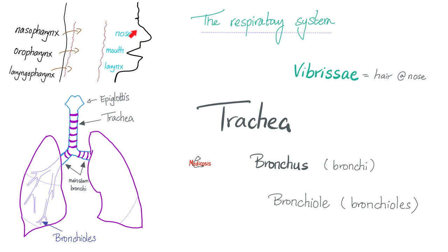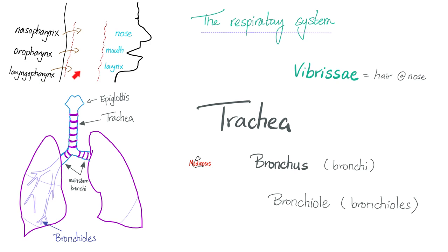We start here. You breathe in via your nose or your mouth. Regardless of the orifice that you use — although I recommend you use your nose — you will end up in the pharynx. The pharynx is a large, big tube, and it's divided into three pieces. The part behind the nose is called the nasopharynx. The part behind the mouth or oral cavity is called the oropharynx. The part behind the larynx is called the laryngopharynx.